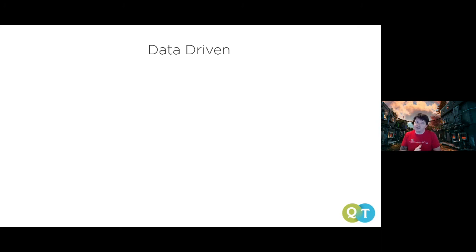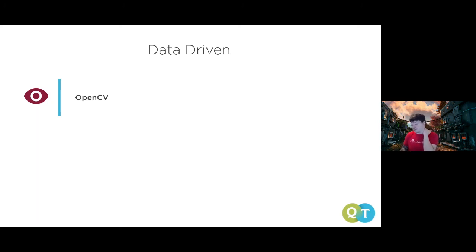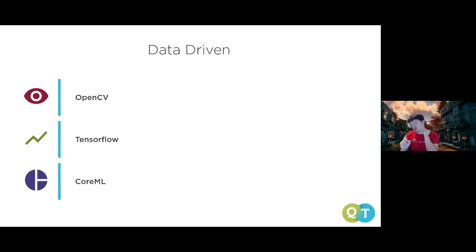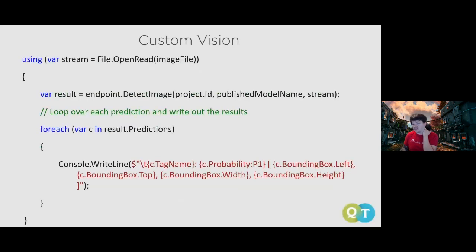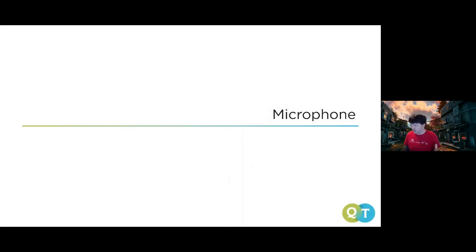For data-driven image processing, you have machine learning and AI approaches. OpenCV is still available and has a lot of machine learning capability built in. There's also TensorFlow for Android and Core ML for iOS when you want to run models on device. Cognitive services make computer vision and facial recognition easy — you just send a file and get back a list of detected features.